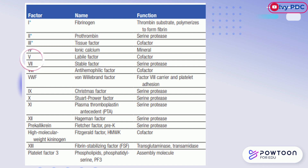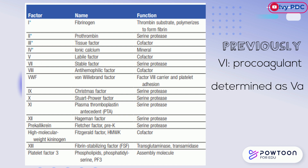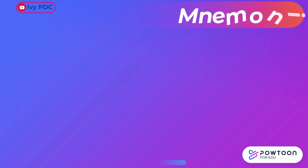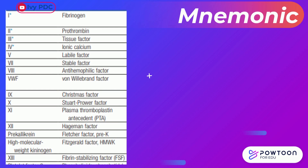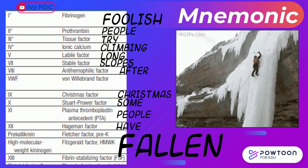Notice that there is no Roman numeral VI. This was assigned to a procoagulant that later was determined to be activated factor V; VI was then withdrawn from the naming system and never reassigned. To end this video, here is a mnemonic for the coagulation cascade: 'Foolish people try climbing long slopes after Christmas. Some people have fallen.' Hope that helps you out.